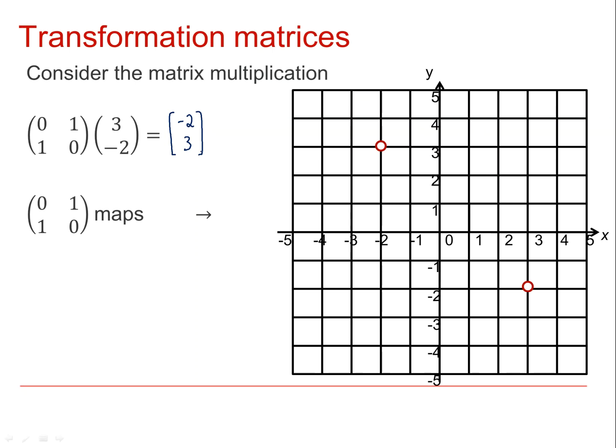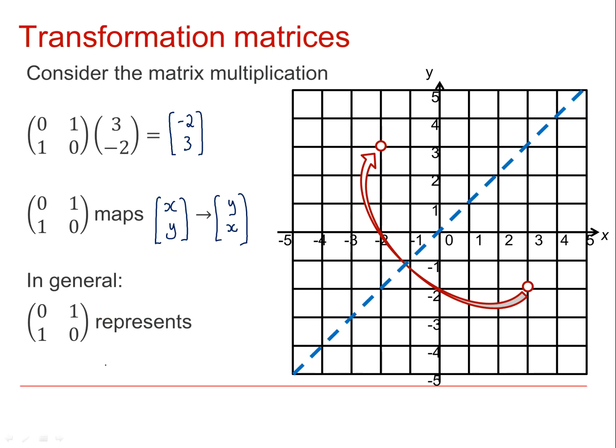The matrix 0, 1, 1, 0 maps the general point x, y to the point y, x. We can see that the x and y coordinates have been swapped round and that this transformation represents a reflection in the line y equals x.